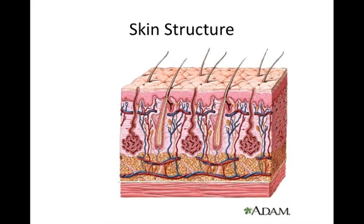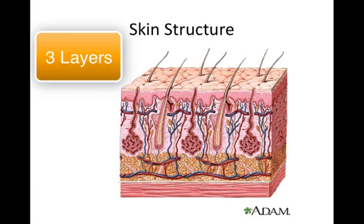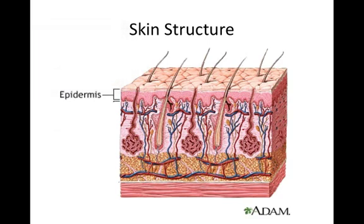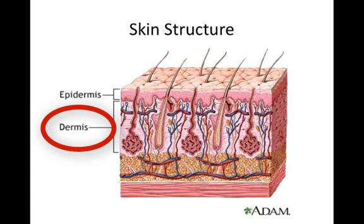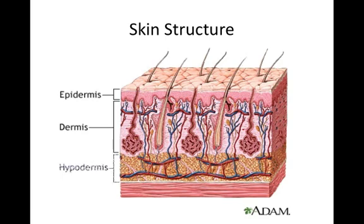The skin has three major layers. The top layer is called the epidermis, which is stratified squamous epithelium — we'll look at that more closely in the following slides. Next is the dermis layer, the support layer, and there's an awful lot going on in the dermis. The lowest layer is the hypodermis, sometimes called the subcutaneous layer.